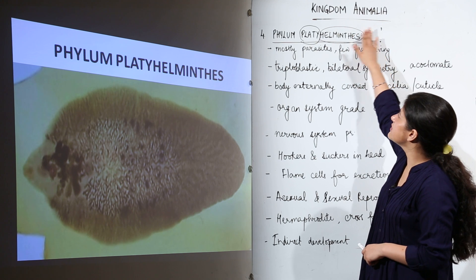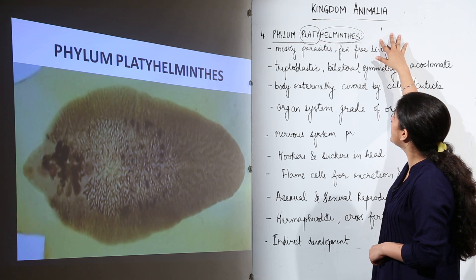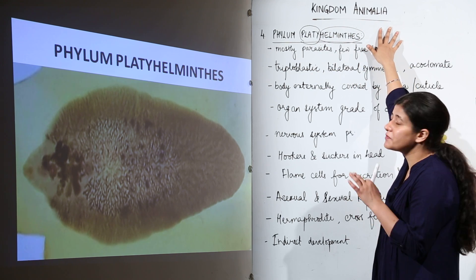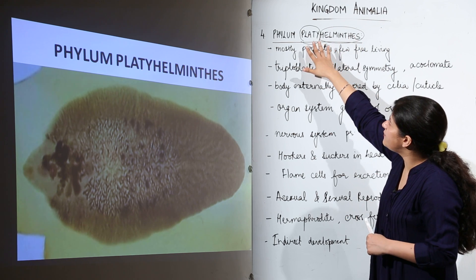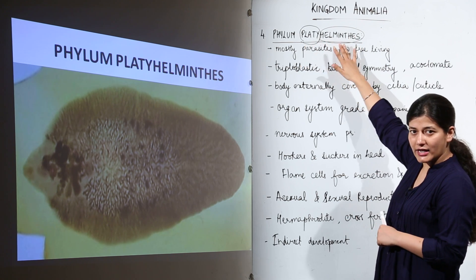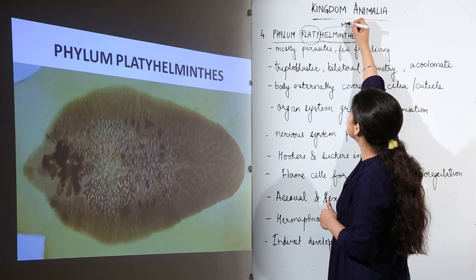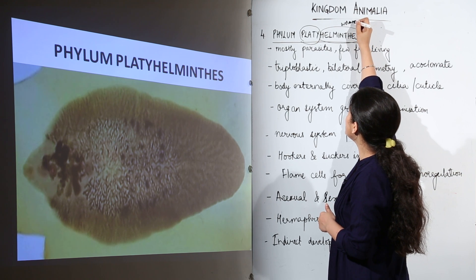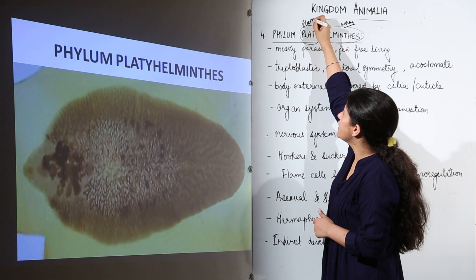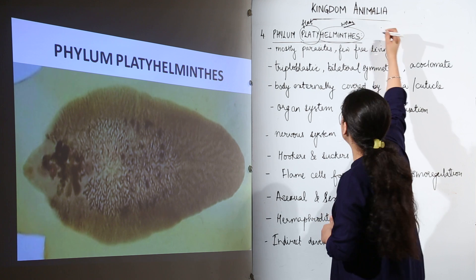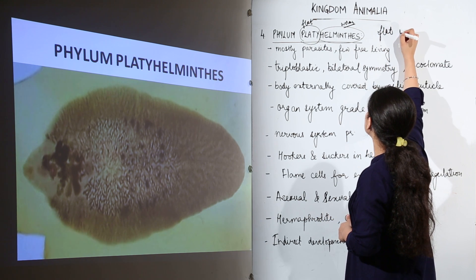We are going to break down the word 'Platyhelminthes' into two words: platy and helminth. Helminth refers to worms, and platy means flat. So this phylum is all about flatworms.